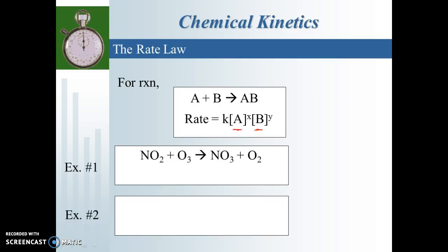For example, let's say we have this reaction with NO2 and ozone. The rate law for that reaction is written as rate equals k. The little k is what's known as the rate constant — we've seen lots of k values before, so this is really no different. The rate constant is specific for this particular reaction at this particular temperature. Every reaction has a different k value, and the rate depends on the concentrations of our reactants.